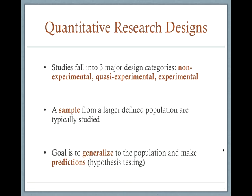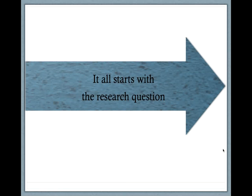Quantitative studies fall into three major design categories, as alluded to in week two: non-experimental, quasi-experimental, and experimental. Samples are chosen from a larger defined population, typically in a representative manner so that inferences can be made back to the population. The goal is to generalize to the population, make predictions, and test the hypothesis. All of this starts with a good research question, which is why getting a good PICO question is critical.